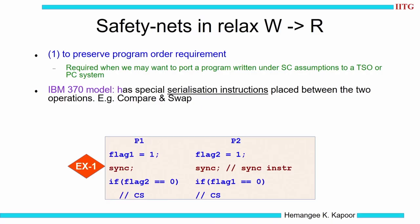Safety nets to relax the W followed by R order. If we want to preserve the program order — that is, we still want to maintain this order in the program — I have written a program where I want this order to be maintained. It was running under an SC machine and now I want to run this program on a machine which supports TSO or other relaxed models. So, how can we make that happen? We will see that for all 3 models we are discussing.